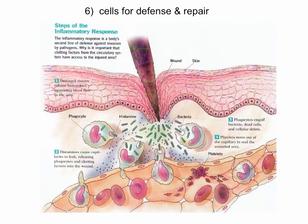There are also cells for defense and repair. You don't have to know all the names of the different types of white blood cells and what they do — we just don't have time for that. But there are white blood cells, platelets, and histamine, which is actually a chemical that's released rather than a cell. All of those are connective tissue cells for defense and repair.